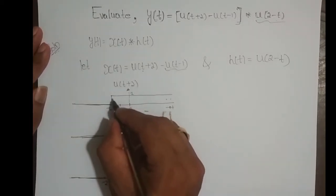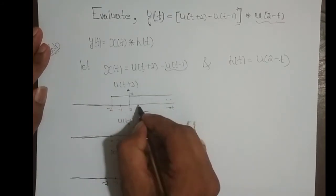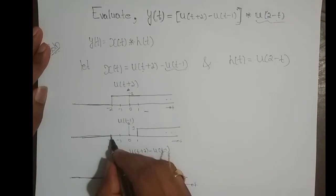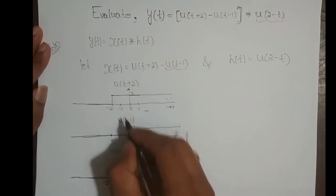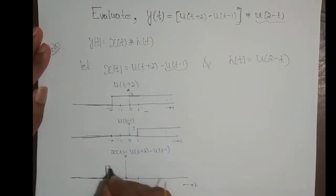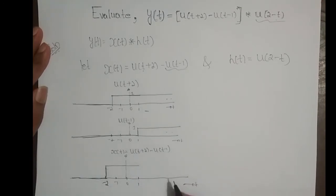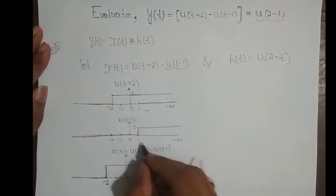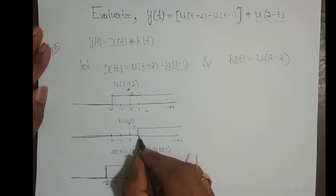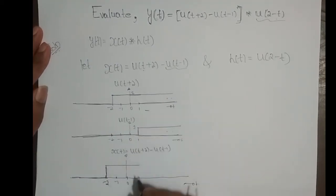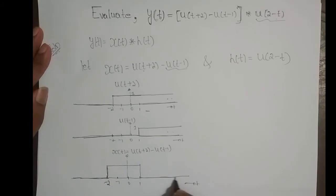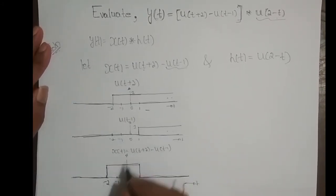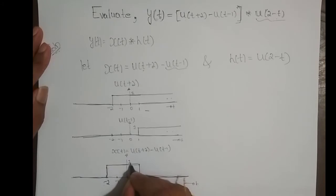For t from 1 to ∞, both signals have amplitude 1, so 1 - 1 = 0. Basically, x(t) is a rectangular pulse for t varying from -2 to 1, with amplitude 1.